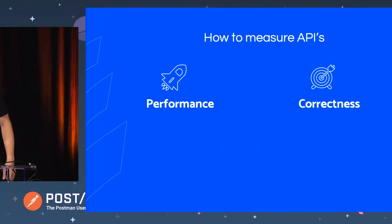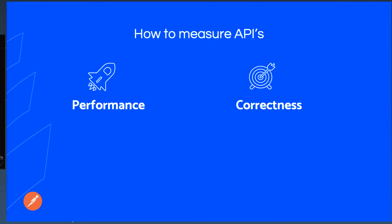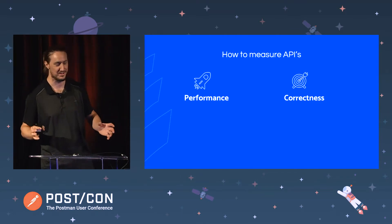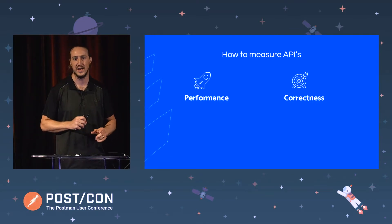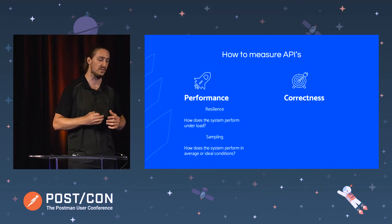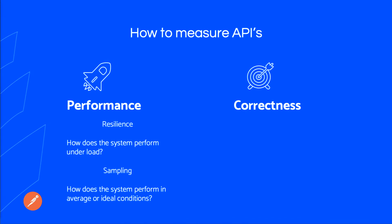The way that BetterCloud thinks about APIs — whether integrating with external APIs or designing and delivering internal APIs — is we think about performance and correctness. You can slice and dice it however you want, but we think of these two major points, and for each of them we split it into the provider's perspective and the user's perspective.